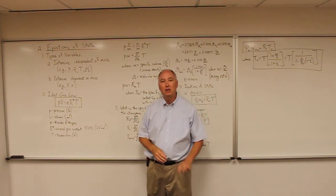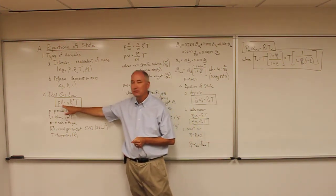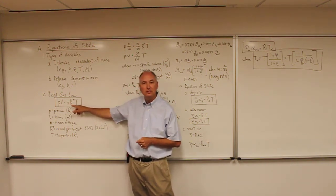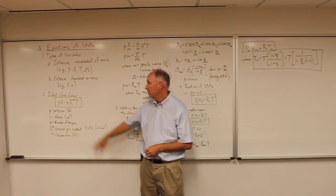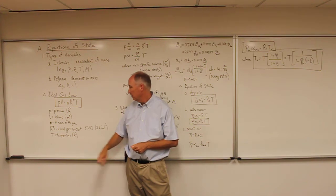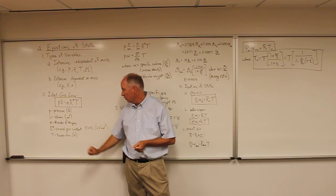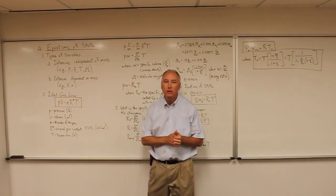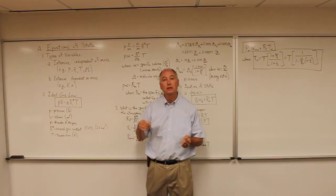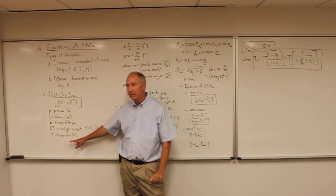If you think back to the ideal gas law from chemistry, it's pressure times volume equal to the number of moles times the universal gas constant R* times temperature. Pressure is in units of Pascals, volume is in cubic meters, and the number of moles is simply a count of moles. The universal gas constant is 8.3143 joules per degree Kelvin per mole, and temperature must be in degrees Kelvin.